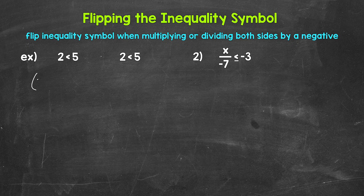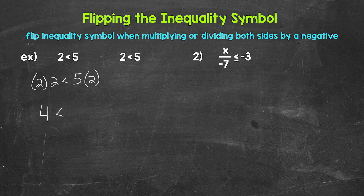Let's rewrite this with both sides being multiplied by 2. On the left, 2 times 2 gives us 4. So we have 4 is less than. On the right, 5 times 2 gives us 10. So we have 4 is less than 10. The inequality remains true after multiplying both sides by positive 2.